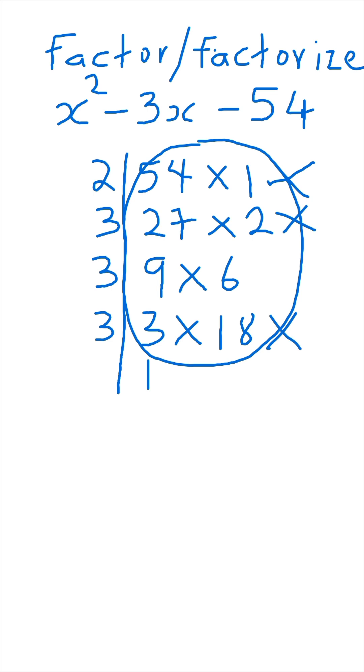But if you look at 9 and 6 closely, it is possible to get 3 from there. So what we simply need to do is to take the appropriate sign. Between 9 and 6, the one that can give us minus 3, we have to be minus 9 and plus 6.